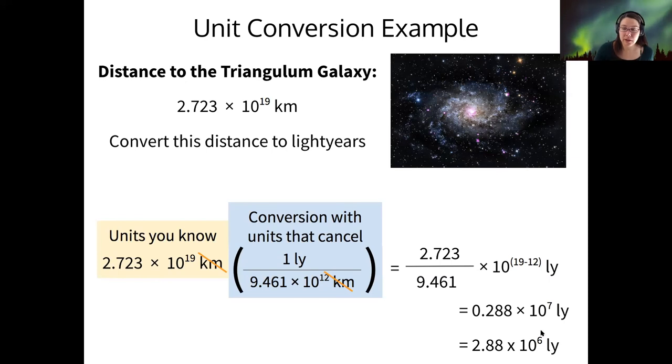All right, so that's 2.88 million light years, meaning that the Triangulum Galaxy's light that we see from it now was emitted 2.88 million years ago.